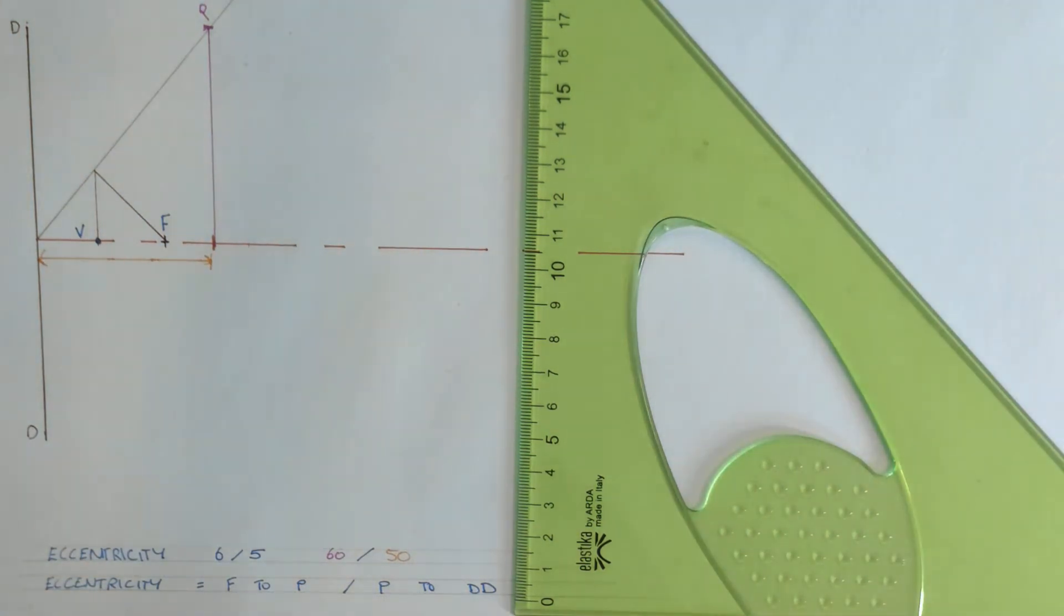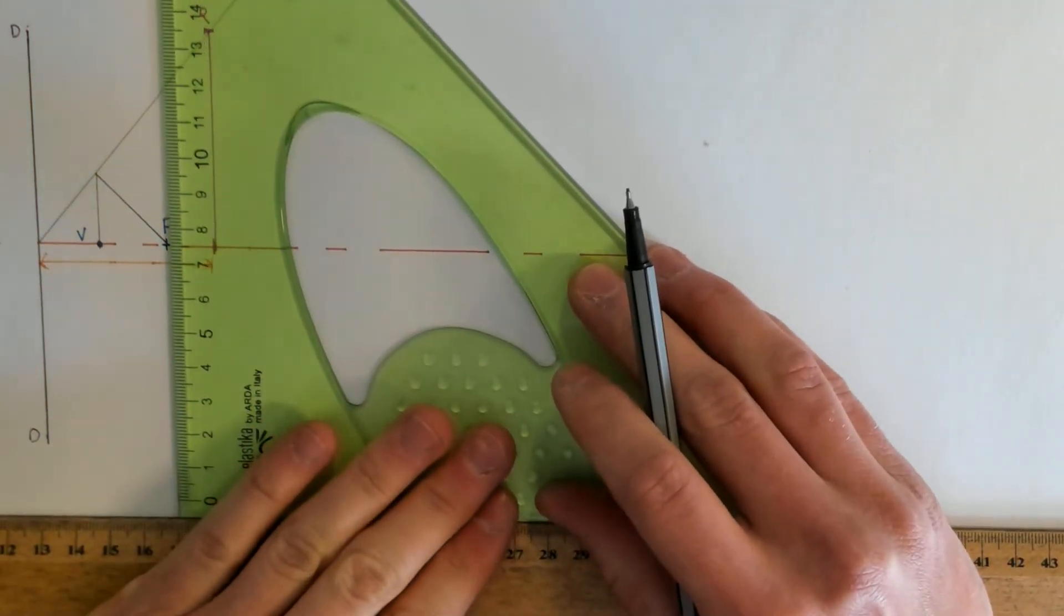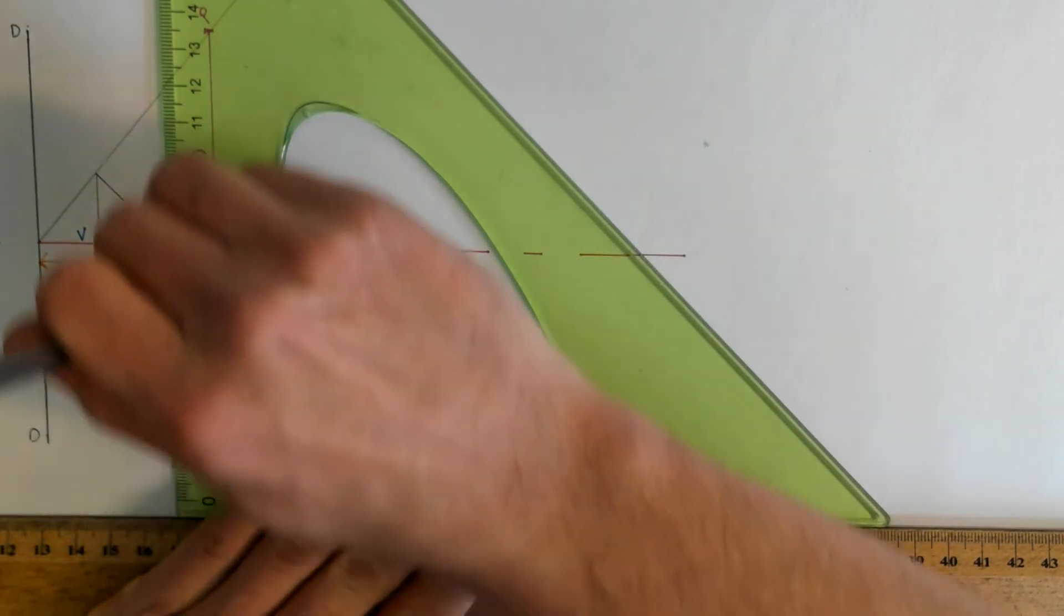We can also set up our focal line, which is a line parallel to the directrix, but it passes through the focal point.